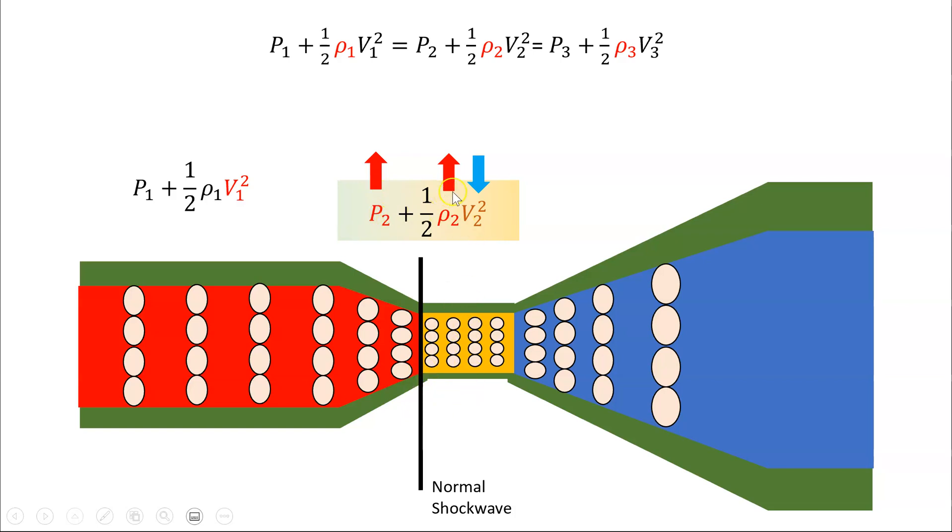So we've seen the pressure's increased, the density's increased, and the velocity has decreased. So this side of the shock wave was supersonic flight, but once we went through it, we're now into subsonic flight, so the velocity was decreasing.